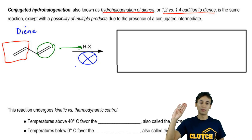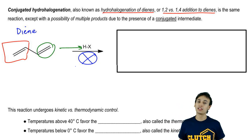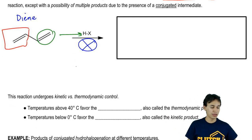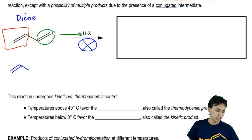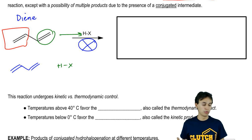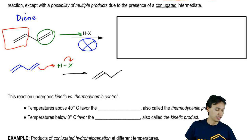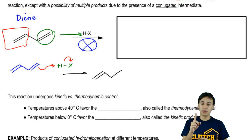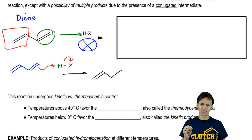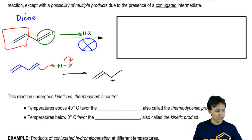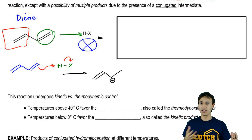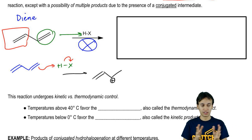Let's draw the mechanism. One of the double bonds attacks the HX and forms a carbocation. We have the choice of putting the carbocation on the primary or secondary position — we choose secondary due to Markovnikov's rule, but also because it's allylic. Allylic sites are always more stable than their non-allylic counterparts.